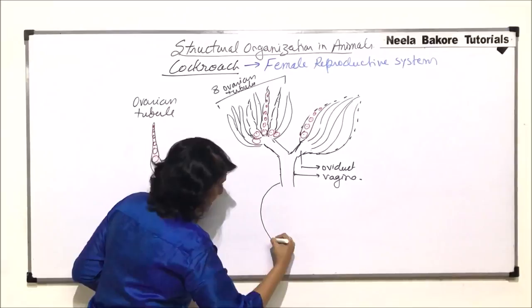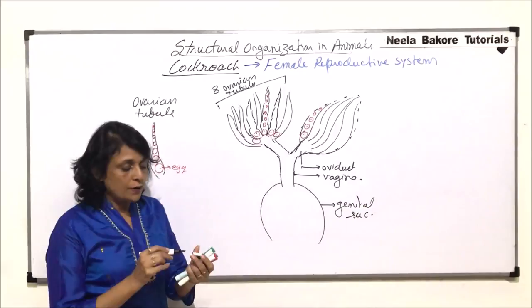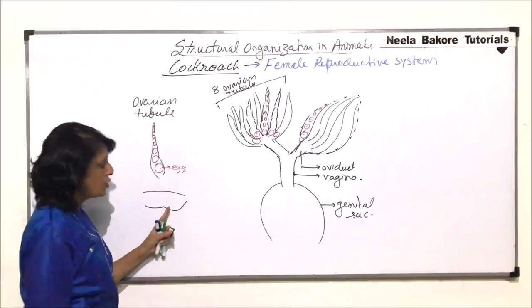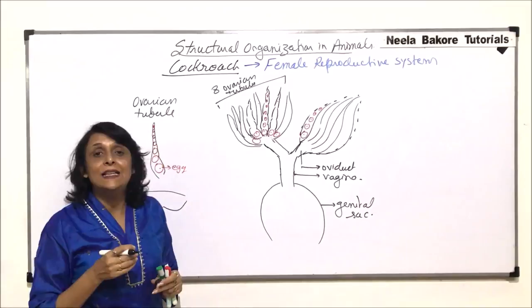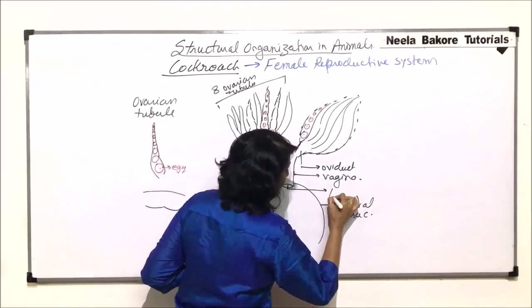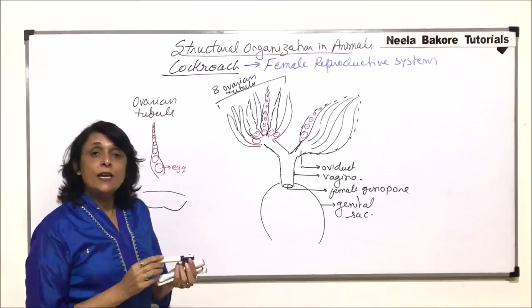This vagina opens into an area which is the genital pouch or genital sac. When we were talking about the morphological differences between male and female cockroach, we said that the abdomen of the female cockroach has a boat-shaped structure formed by the seventh sternum. Inside is a cavity, and in this cavity we find this opening, which is the opening of the female reproductive tract. It is known as the female gonopore, from which the eggs would be released.